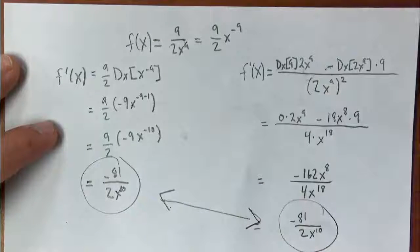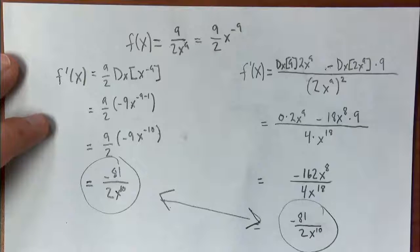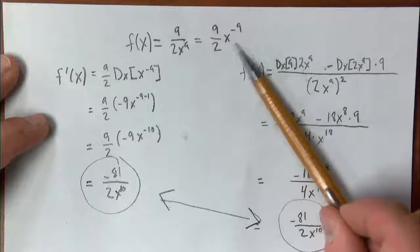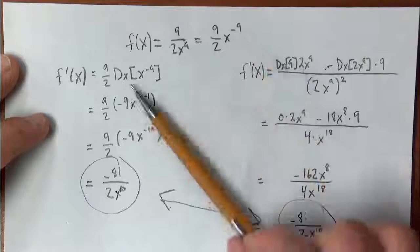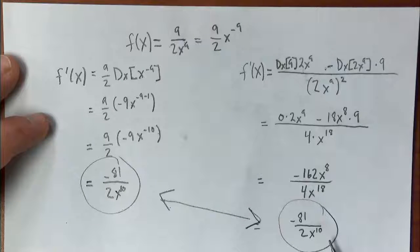Notice the exact same answer from both methods. Two different methods, you get the exact same answer. There are going to be different options for lots of these derivatives. As long as you follow the derivative rules and the rules of algebra to simplify and transform your function, you'll be fine. Here we took the function as given, rewrote it using the rules of exponents, and that gave us another way to solve. The power rule way was a bit easier.